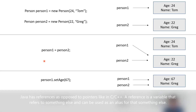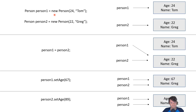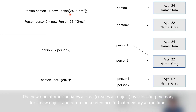A reference variable is a variable that refers to something else — specifically an object. Here we have two reference variables: person one and person two. You can see what they're referring to is a new person object. The new operator is what actually creates the object. We are creating two objects: one called Tom and one called Greg. Person one refers to Tom, person two refers to Greg.